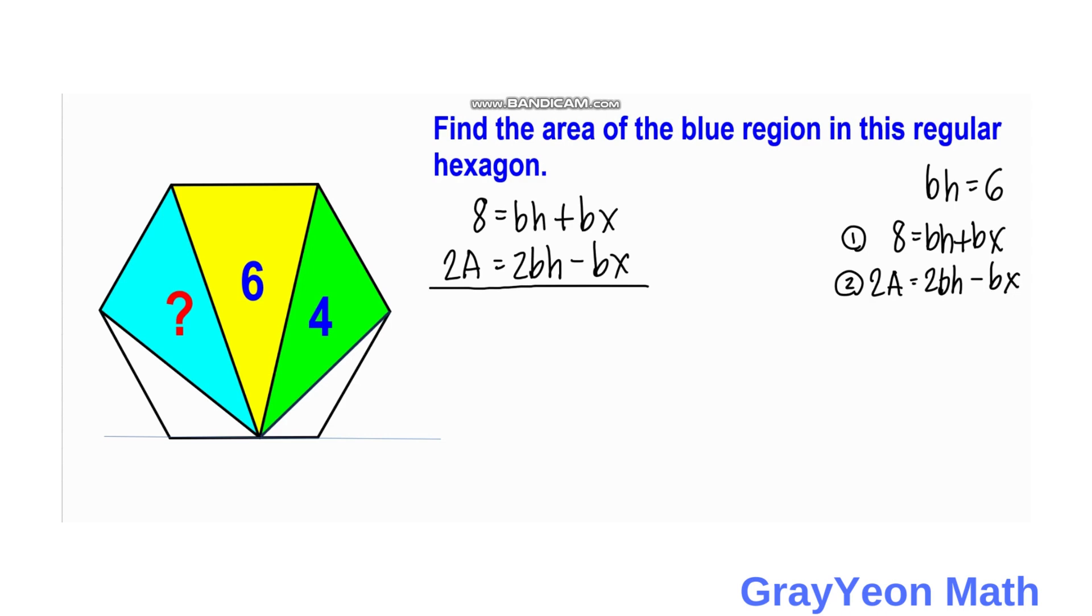For the next step is we are going to solve this resulting system of linear equations. To solve this, we just need to add the 2 equations. So, this BX cancels out. And we have on the right side, we have 3BH. And on the left hand side, we have 8 plus 2A.